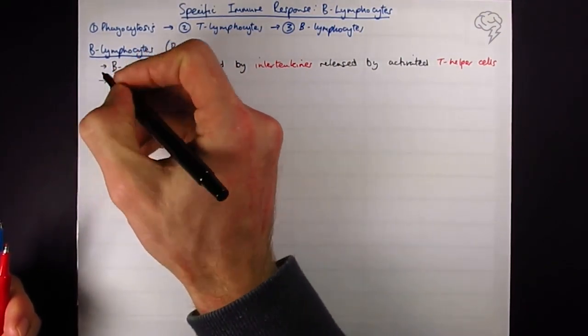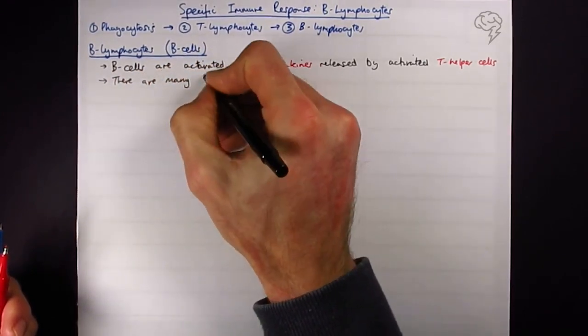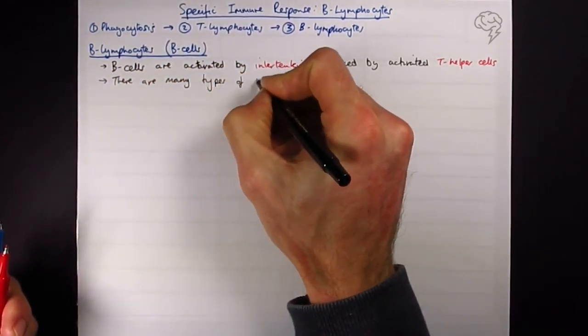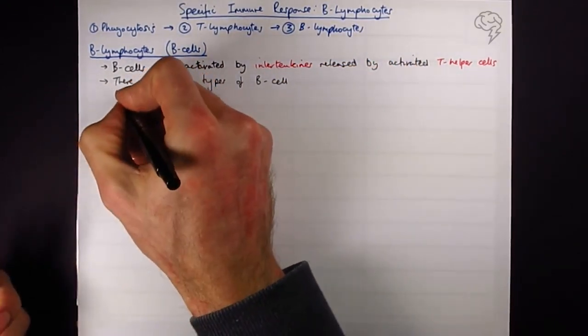Again, much like T cells, there are many types of B cell. Each one has a different antibody which is a protein on its surface.